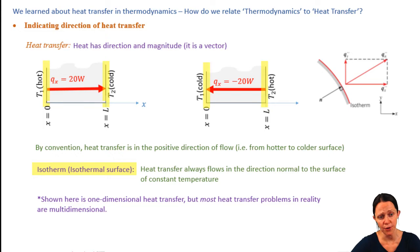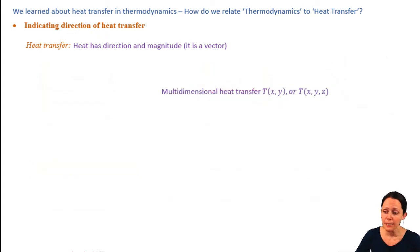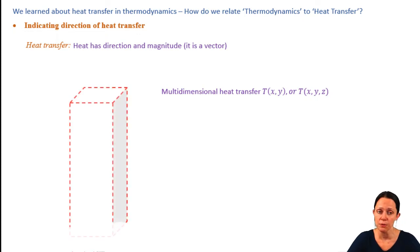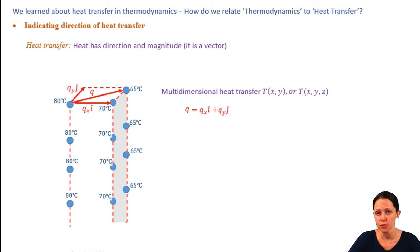Here we have one-dimensional heat transfer, so it's only in the x-axis. But most heat transfer problems in the real world are multi-dimensional, meaning in Cartesian coordinates you'd have to define your heat transfer vector with x, y, and z components. Three-dimensional heat transfer is outside the scope of this class, but we will talk about two-dimensional heat transfer. For example, a long beam with a temperature gradient will have heat transfer in the x and y directions, but not the z direction if there's no temperature gradient there.